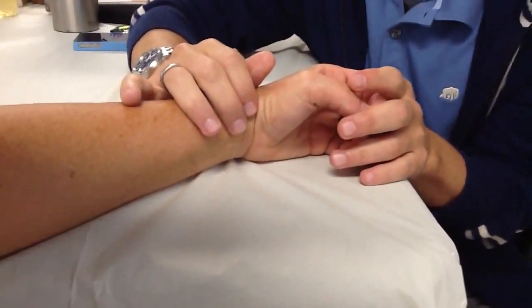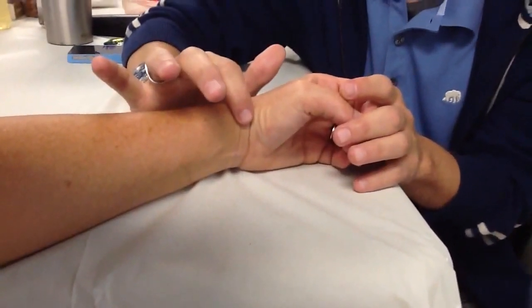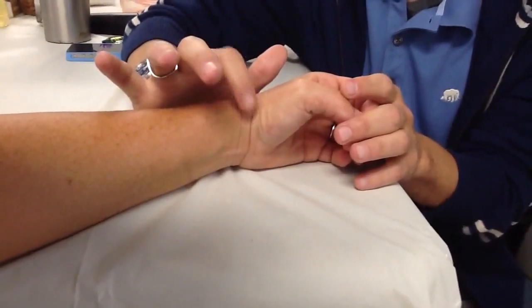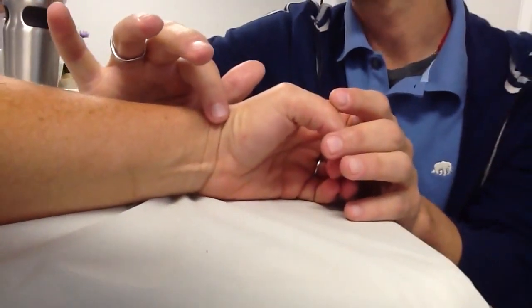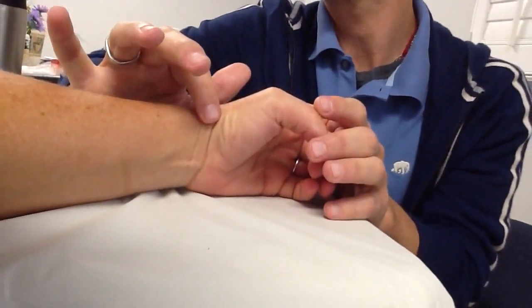This is mitral valve, right on top of the tendon. Can you see? That's the left distal. That's the heart.